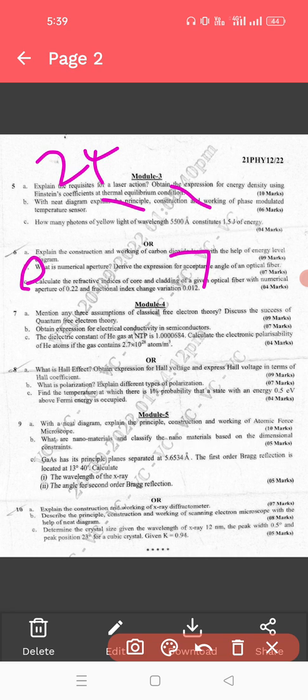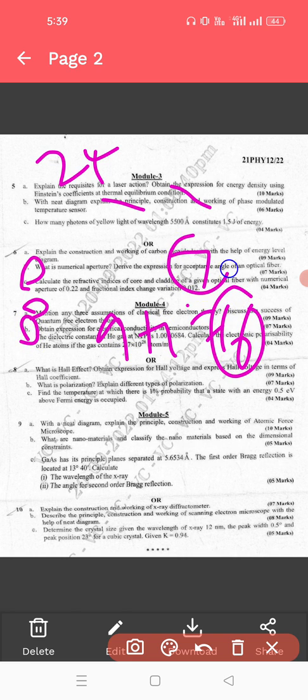Then I will go to module 4. In module 4, a, b, c, so 7a appeared and 7b appeared, so it is 9 plus 7, which is 16. Then eighth question, Hall effect appeared for 9 marks. I will not consider it.